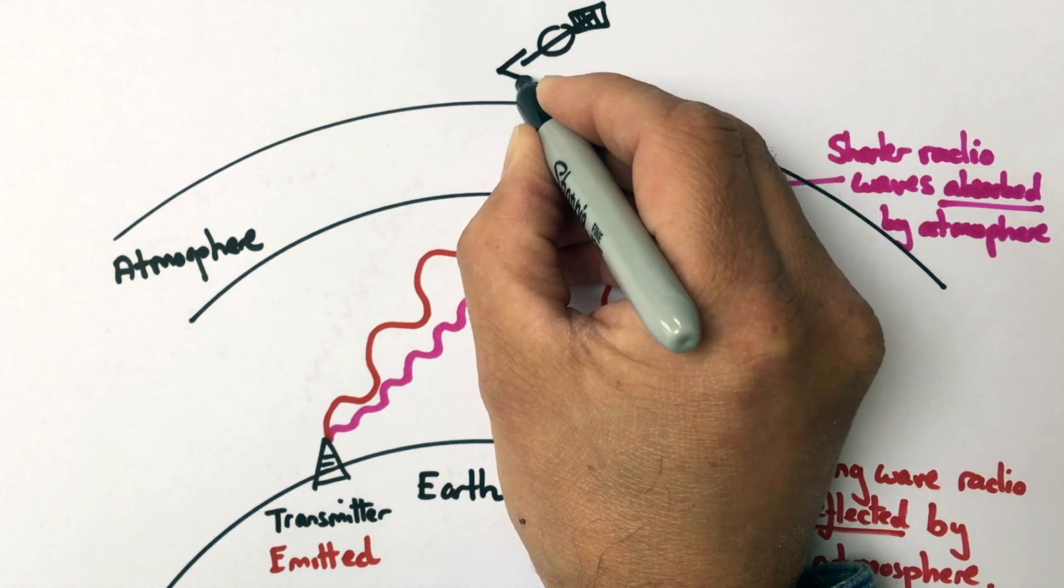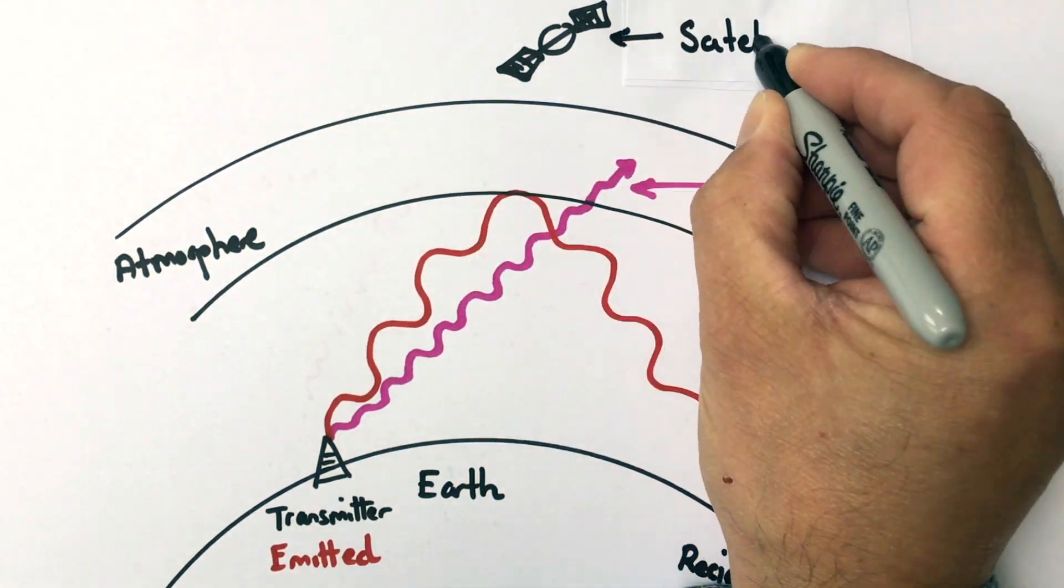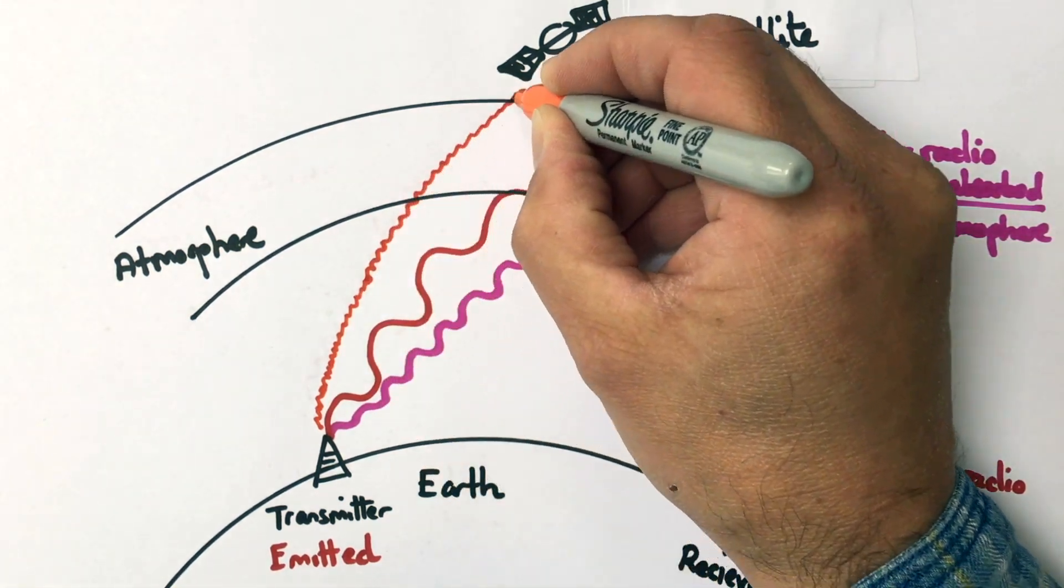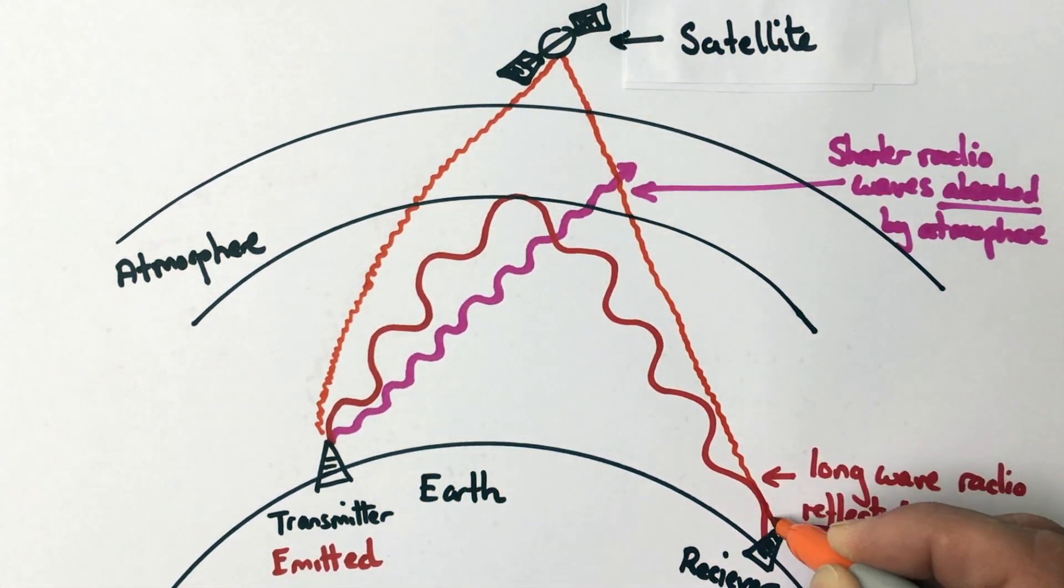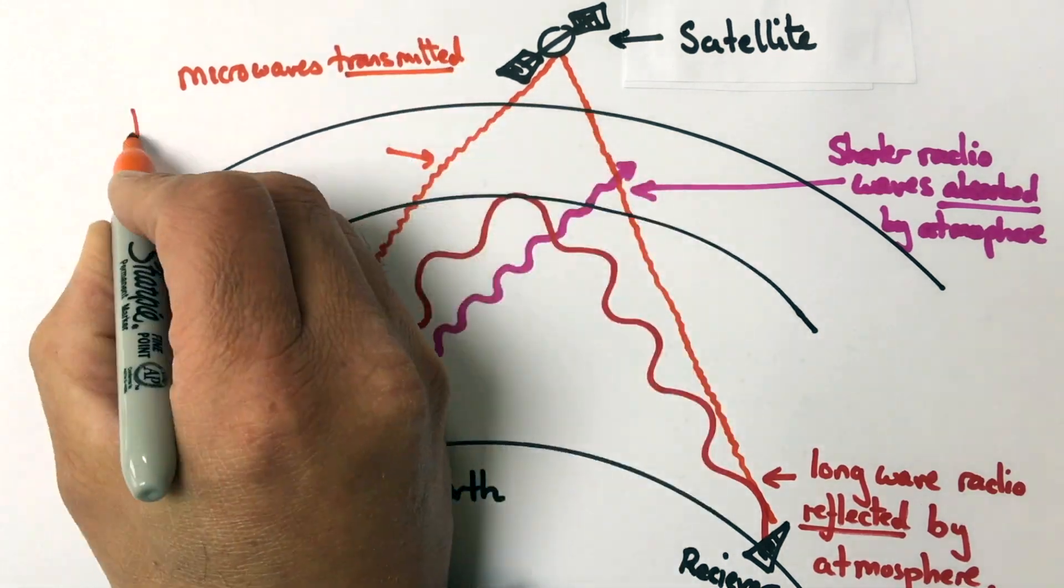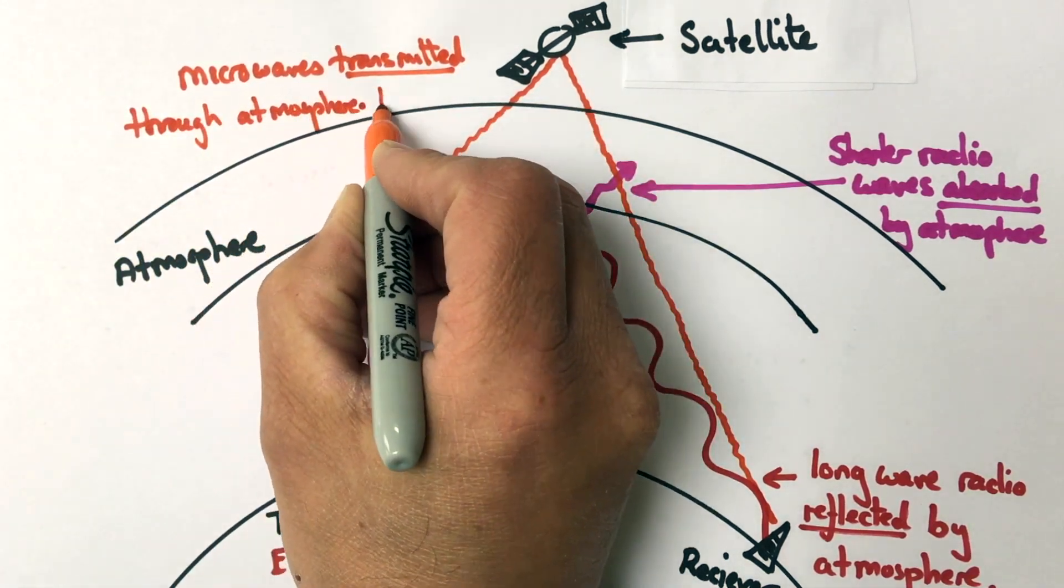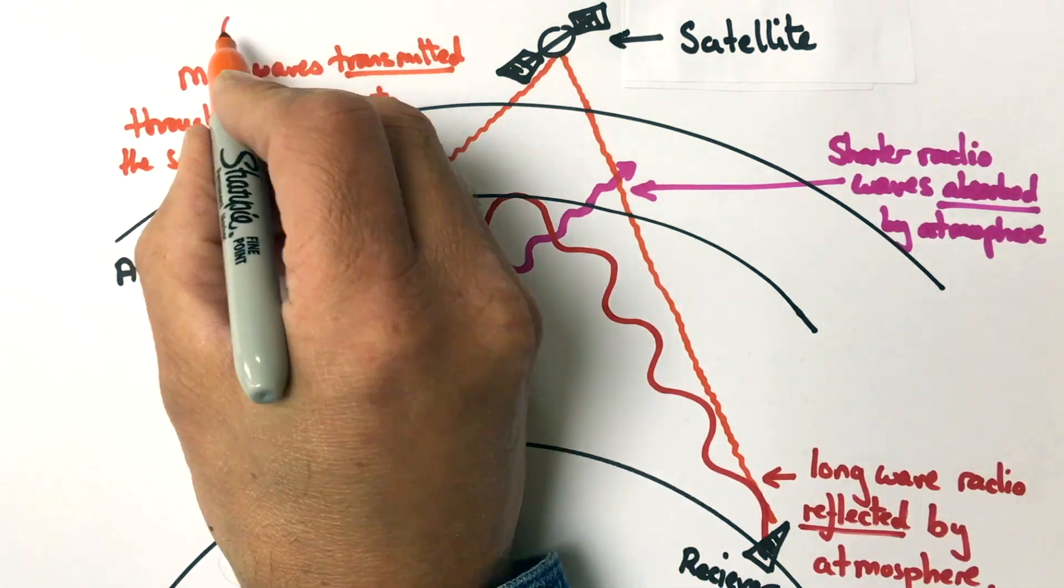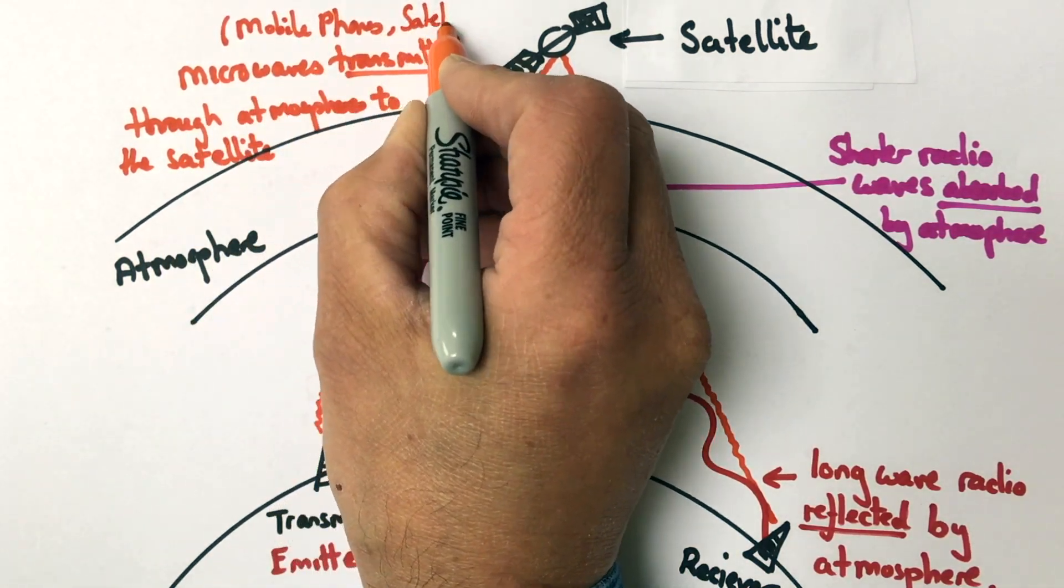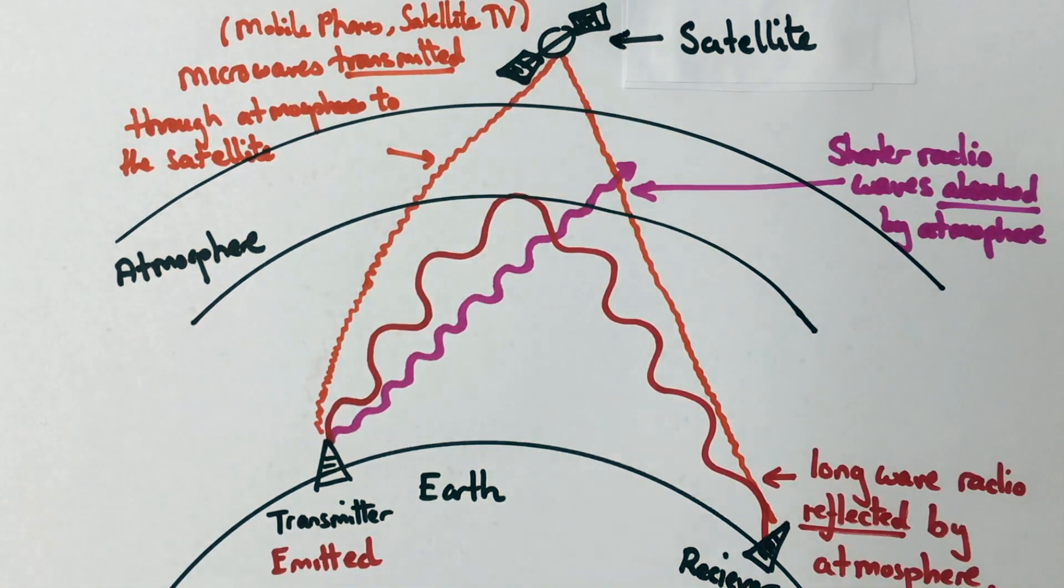What type of electromagnetic waves are used to communicate with satellites? The much shorter wave microwaves with a higher energy can be transmitted through the atmosphere to the satellite and then sent back down to earth. Microwaves can be used for both mobile phone communications to satellites and also for satellite TV.